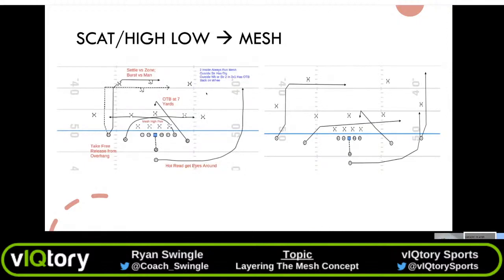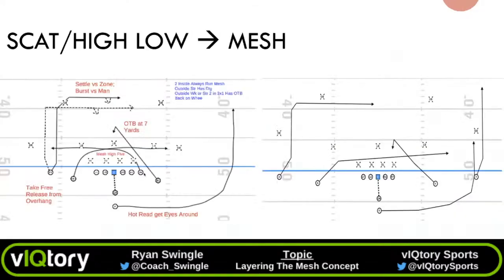Before we get into the concepts, I want to talk about some key coaching points for Mesh. The receiver to the passing strength — whichever side the quarterback is going to look to first in his read — in this case to the right, checking the wheel down to the underneath crosser. That crosser to the passing strength, the play-side number two, he'd be what we call the point man. He is setting the mesh at five yards.